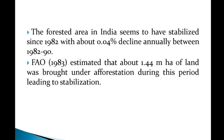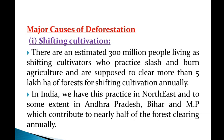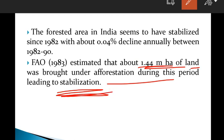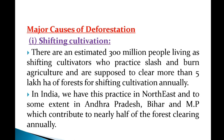According to FAO (Food and Agricultural Organization), 1983 estimated that about 1.44 million hectares of land was brought under afforestation during this period, leading to stabilization. Now let's look at the causes — what are the causes of deforestation?